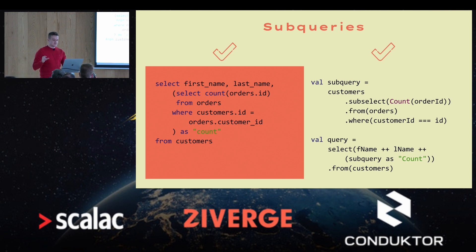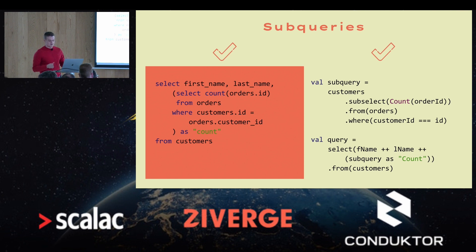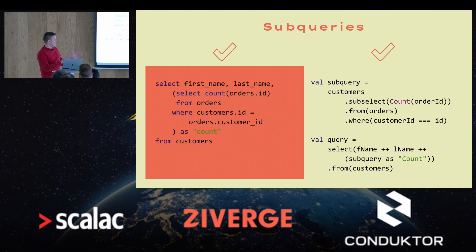In this specific case we have a correlated subquery that's executed for each row of the outer query and uses values from that outer query. I extracted it to its own value, but you can also inline it if you prefer, which would make it look much more like the raw SQL on the left-hand side.